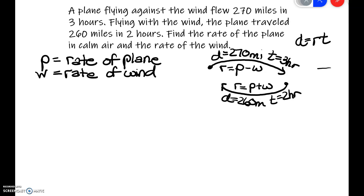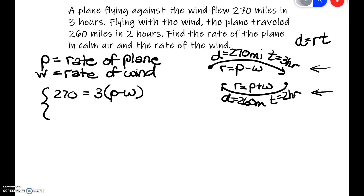So we have two equations. The first comes from flying against the wind: 270 equals 3 times (P minus W). The second comes from flying with the wind: 260 equals 2 times (P plus W).